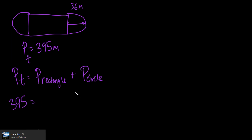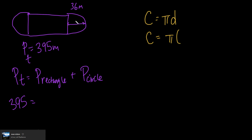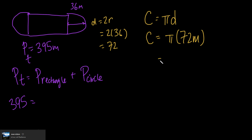We know the total equals 395, which is a combination of both parts. To get the perimeter of the rectangle, we first calculate the perimeter of the circle. The circumference of a circle equals π times diameter, so C = π × d. They give us the radius, which is 36 meters, so the diameter is 2 × 36 = 72 meters.